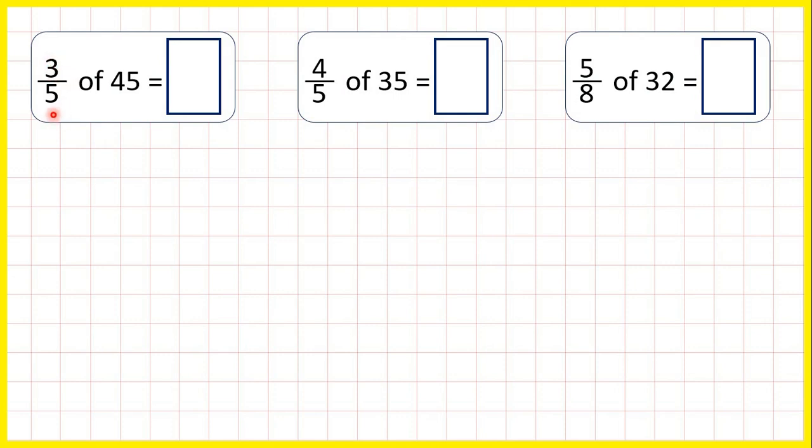To find a non-unit fraction of a number, we divide it by the denominator, and then multiply that answer by the numerator. The way I remember this is divide denominator, then times top.